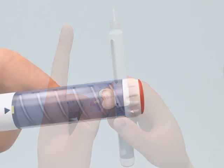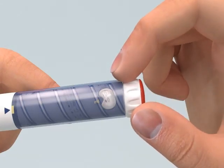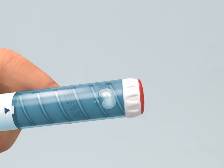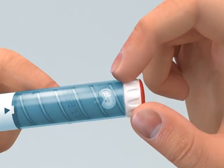If you are using the Omnitrope pen 5, set the dose 0.05 milligrams by turning the dose knob one click. If you are using the Omnitrope pen 10, set the dose 0.1 milligrams by turning the dose knob one click.